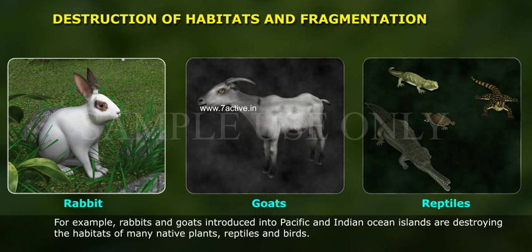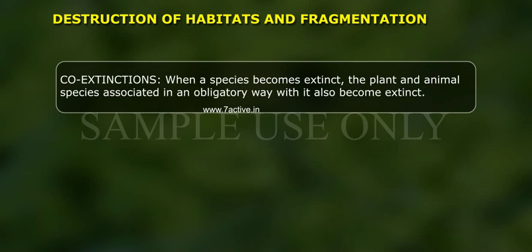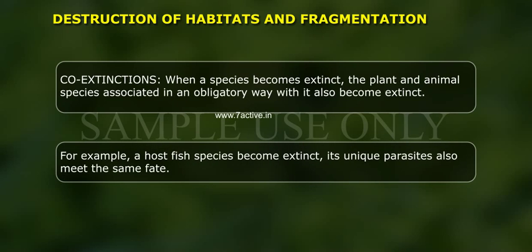Co-extinctions: when a species becomes extinct, the plant and animal species associated with it in an obligatory way also become extinct. For example, when a host fish species becomes extinct, its unique parasites also meet the same fate.